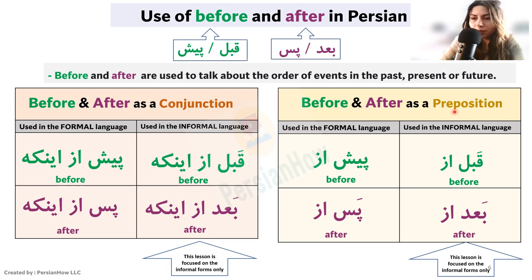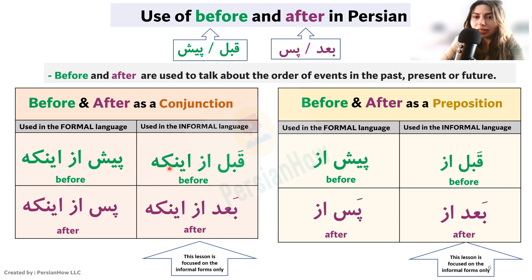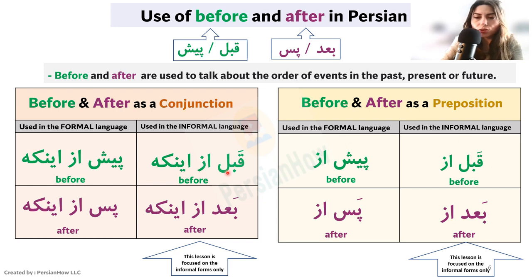Let's go over the generic terms. When before functions as a preposition, it becomes qablaz. The generic term is qabl, but we add az to it when used as a preposition. Ba'daz is after as a preposition. In formal language: pishas and pasas. When it functions as a conjunction, before becomes qablaz inke, after becomes ba'daz inke. In formal language: pishas inke and pasas inke. In this lesson we'll focus on the less formal terms, because we're learning these words to talk about routines and everyday things, so we don't need to speak very formally.